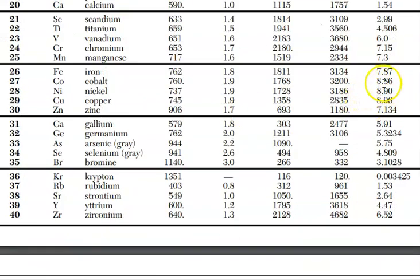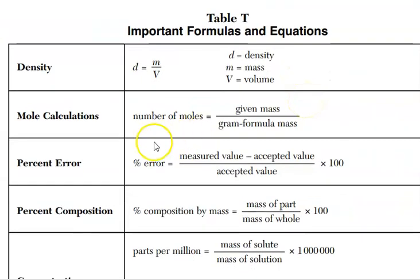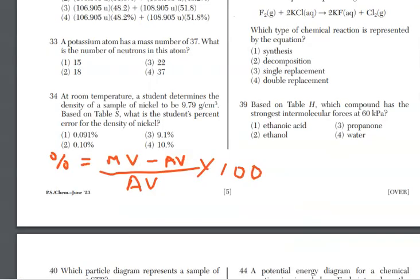8.90 is the true value. Now, if we go to reference table T, we also need the percent error calculation, which is here. Here is the equation. The measured value, that's the same as the student value. That's your 9.79. And then 8.90 was the accepted value. So we're going to subtract the two numbers and then divide by 8.9 again and then times by 100. When you do all that, you're going to get an answer of 10%. For 34, it's choice 4.